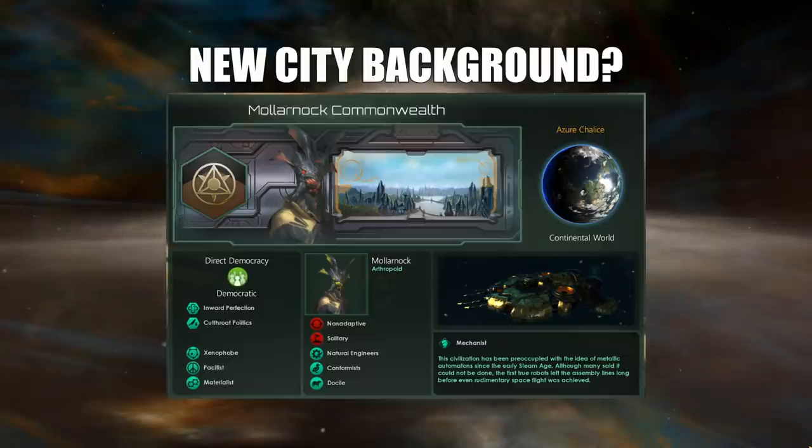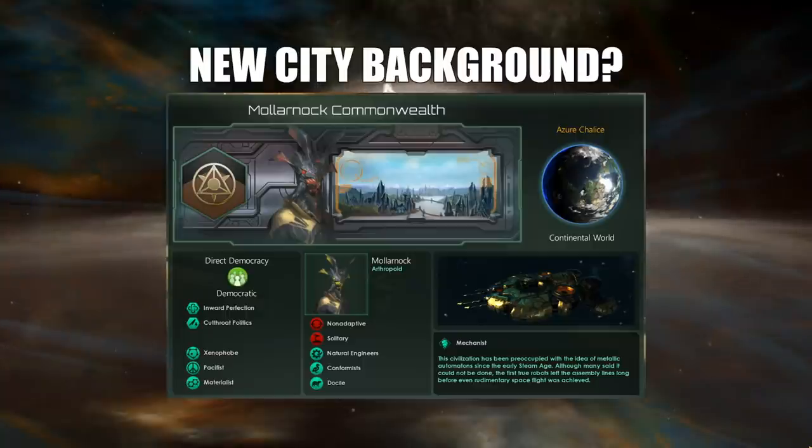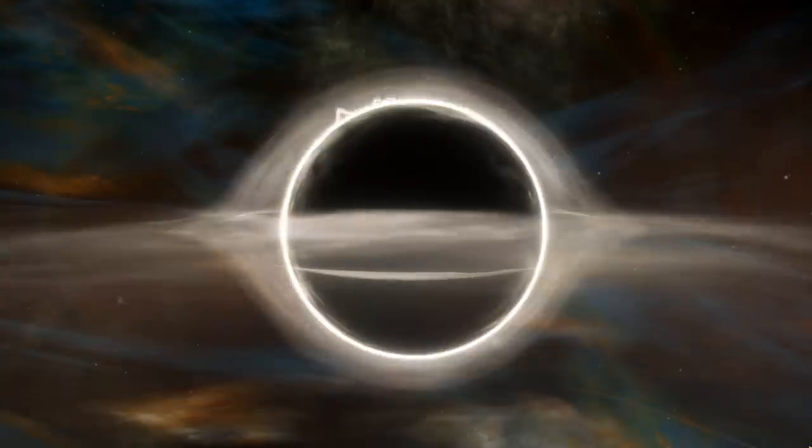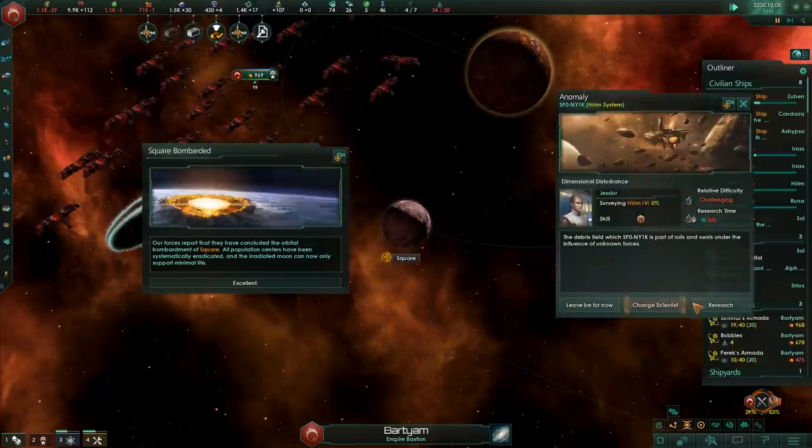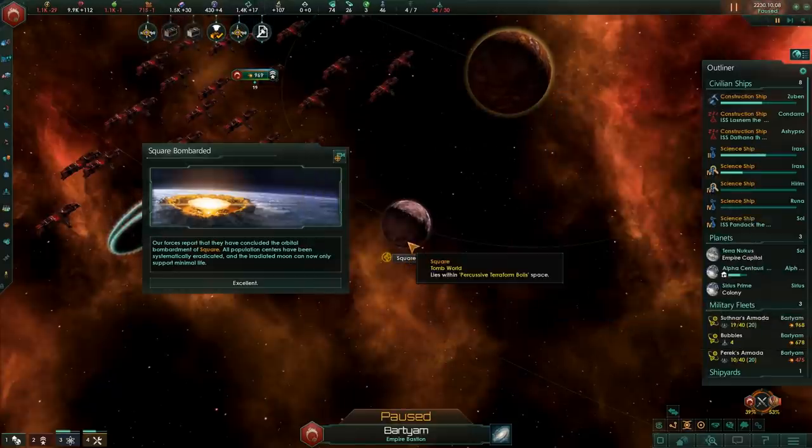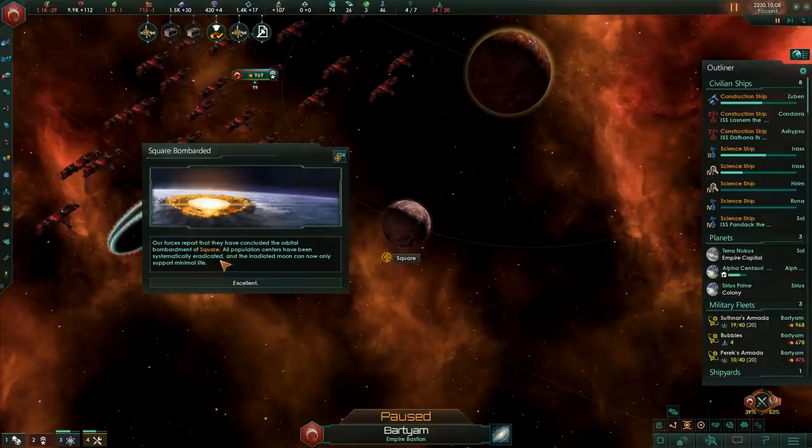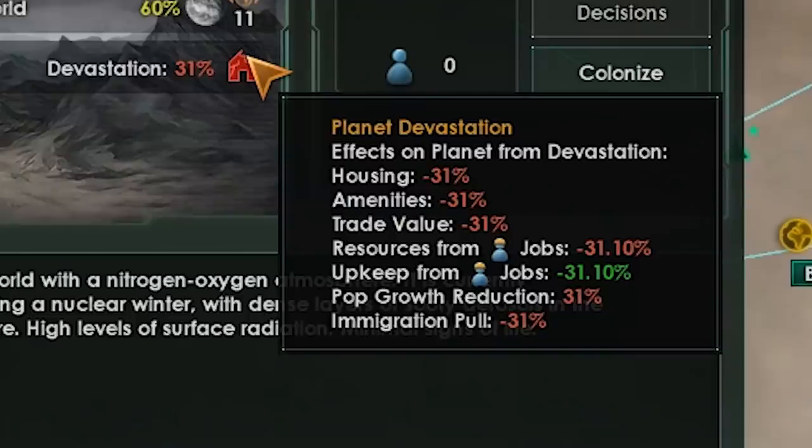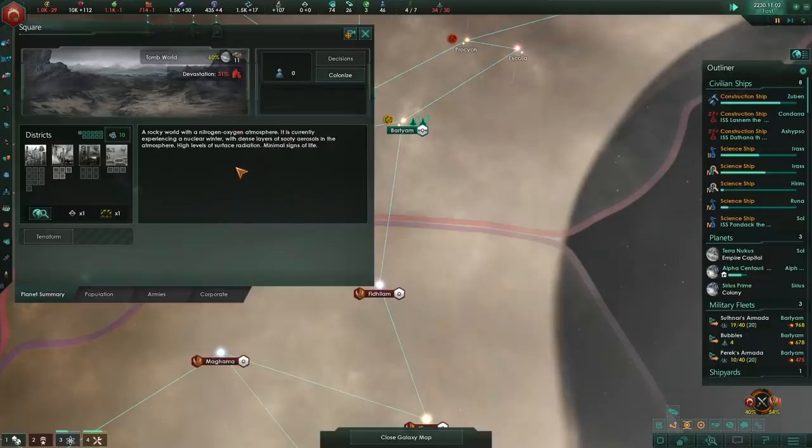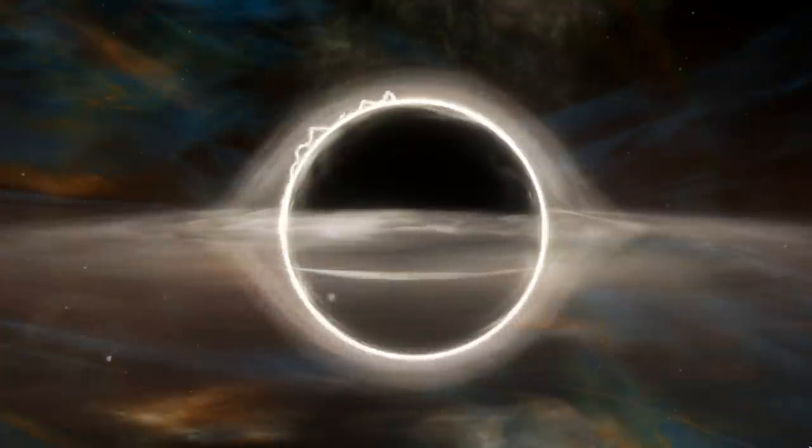Now there is a couple of caveats here that we need to take a look at. Now for those of you who have played with Apocalypse as well as the joys of Synthetic Dawn, you will know that there is a special bombardment stance which is called Apocalyptic Bombardment which is attached to Fanatic Purifiers and the Determined Exterminators. These two cannot have this civic. So basically what this means is you cannot use the special bombardment stance to turn worlds into tomb worlds to use this particular civic. It'd be absolutely insane if you could do that.